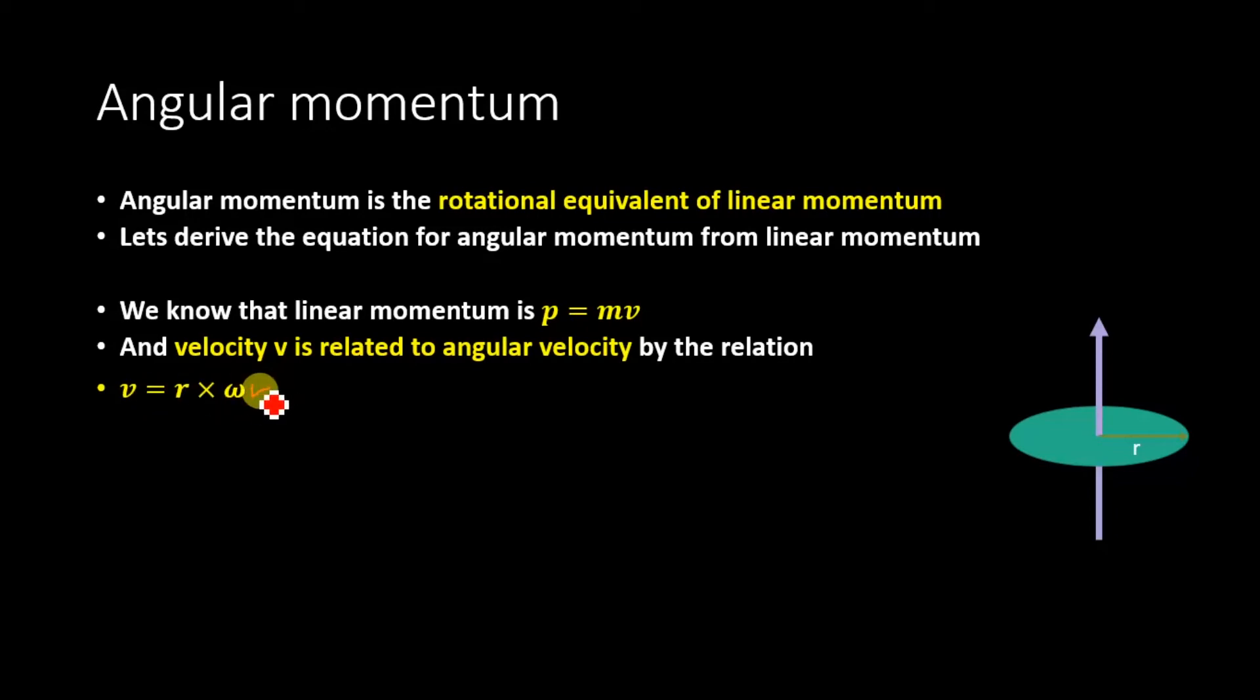Substituting the value for velocity v in this equation, we will get p equals mr omega, and this mr is known as moment of inertia and is denoted by I. So we have momentum is equal to I omega, and this is known as angular momentum. So we have angular momentum L equals I omega.